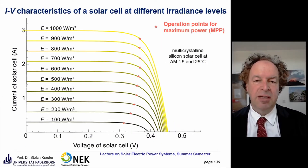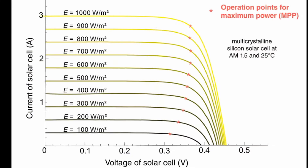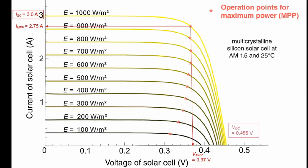Let's start with the first part. This has been the IV characteristics and we have to find the values at 1000 W/m². The red stars are the operation points for the maximum power point. At 1000 W/m², the voltage at the maximum power point is around 0.36–0.37 volts and accordingly the current at the maximum power point is 2.75 amps. The short circuit current is 3.0 amperes and the open circuit voltage is 0.455 volts.